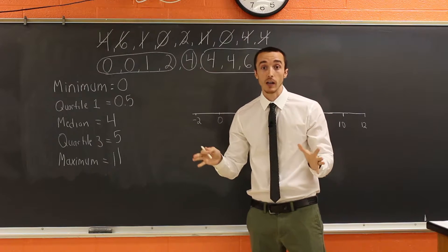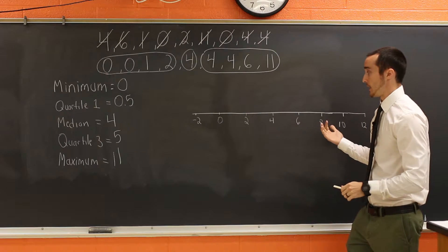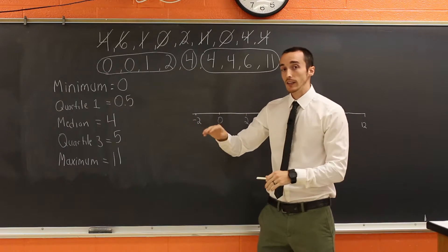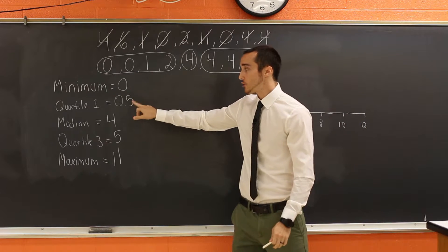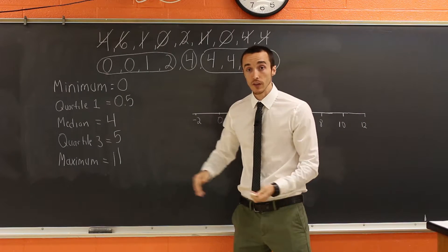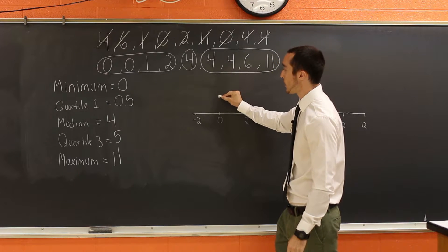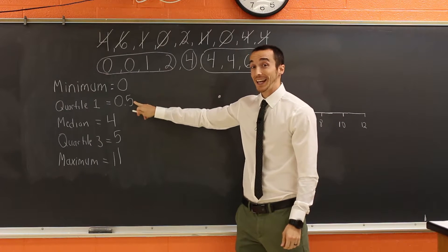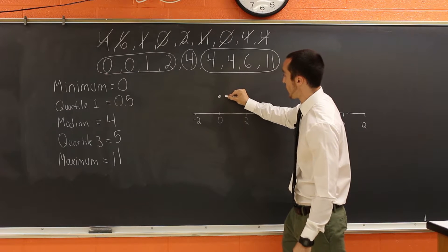Now we're ready to make the box and whisker plot. As you can see, I've already got a number line here. And all I'm going to do is make a dot above the number line in each one of these positions. So let's do that first. We're going to have a dot. Again, this is floating above the line at zero. I need one at 0.5. So we're going to have to estimate that would be right around in here.